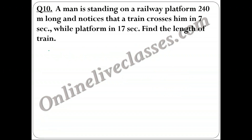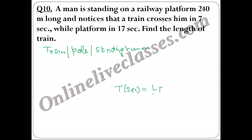Case 3 — Train crossing a Pole or Standing Person: The length of the pole/person is negligible (≈ 0), and their speed is zero. So: Time (seconds) = Length of Train / (Speed of Train × 5/18). Kindly pause the video and note down the solution.